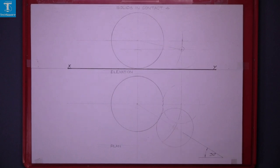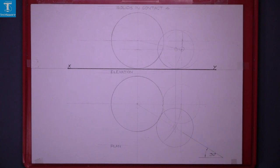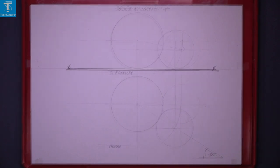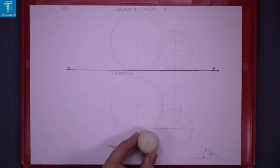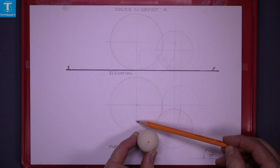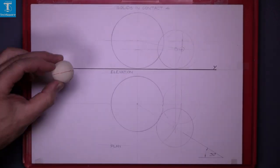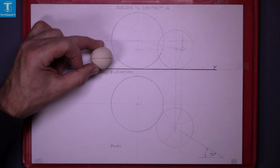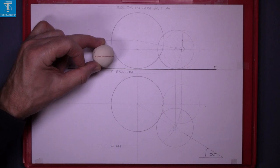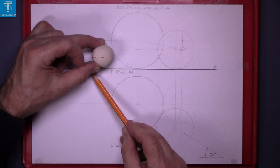Draw in the sphere and project up to get the elevation. The next part of the question is to draw a smaller sphere in this position in contact with this sphere and the larger sphere. To start off, we position it in this location in contact with the large sphere and in contact with the ground.